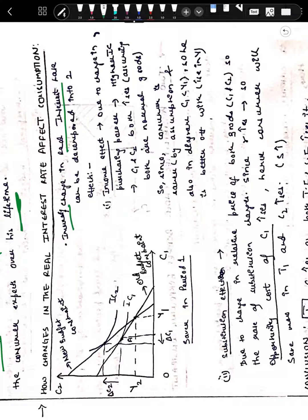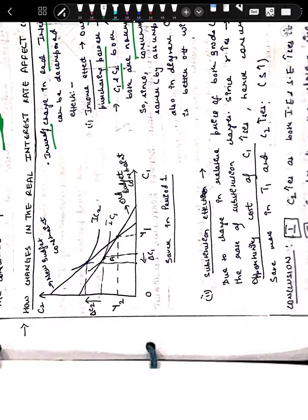The income effect says that due to a change in purchasing power — when income increases — we reach a higher indifference curve and both C1 and C2 increase, assuming both are normal goods. Income effect states that for normal goods, consumption increases. So income effect says that when the real interest rate increases, consumption in both periods rises.